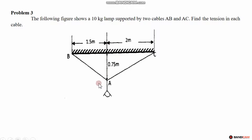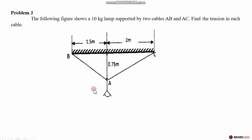The resultant of all forces is zero — the bulb and lamp together are 10 kg, so the weight is the applied downward force. The tension in each cable acts upward. We apply the equilibrium condition — this is the Lami's equilibrium condition — so we draw the free body diagram.